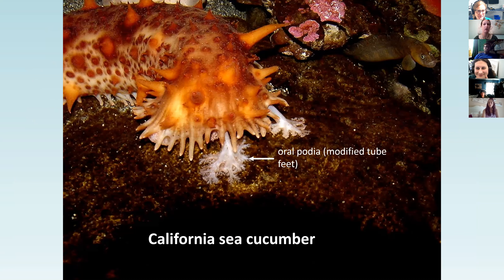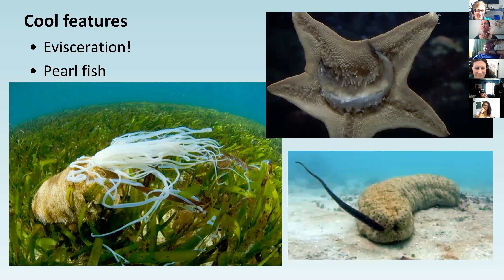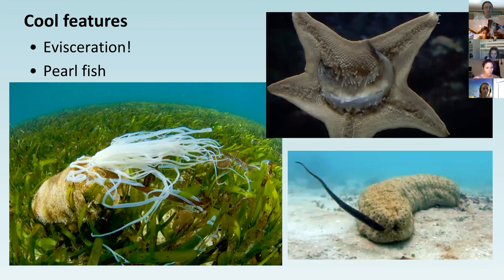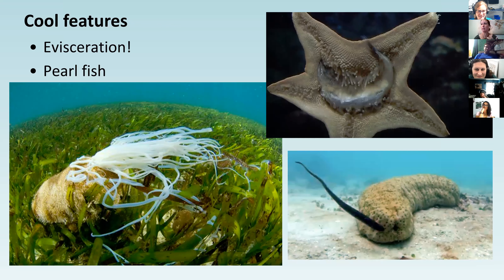Sea cucumbers - this is a close-up of the California warty sea cucumber and their podia or tube feet. They graze along the bottom sucking in sand and debris and passing it through. If they get stressed, they can do what's called evisceration - it looks like spaghetti, it's stinky. If a predator threatens a cucumber, it can spit out its guts; the rest of the cucumber gets away while the predator is grossed out or eats the guts. The sea cucumber can then regenerate, but it takes a while.